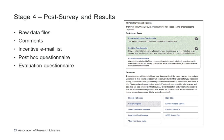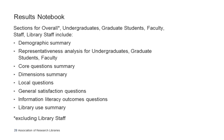Also available in Stage 4 is a post-hoc questionnaire asking information about your survey, including sample size, number of emails sent, number of invalid email addresses, incentives offered, and marketing techniques. You'll also see an evaluation questionnaire where you can provide feedback about your LibQual experience — all survey liaisons are encouraged to complete this, and it is anonymous. Your results notebook will be available on your survey dashboard and in the LibQual data repository about two weeks after you close your survey. The notebook contains sections for overall, undergraduates, graduate students, faculty, staff, and library staff, and within each section you'll see a demographic summary, core questions summary, local questions, general satisfaction questions, information literacy outcomes, and a library use summary.